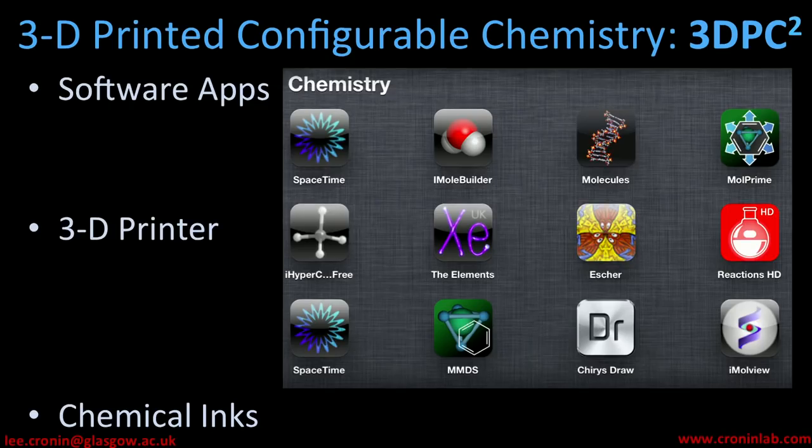So, how are we doing this in the lab? Well, it requires software, it requires hardware, and it requires chemical inks. The really cool bit is the idea that we want to have a universal set of inks that we put out with the printer, and you download the blueprint — the organic chemistry for that molecule — and you make it in the device. You can make your molecule in the printer using this software.